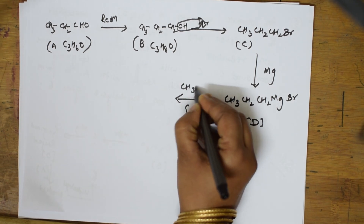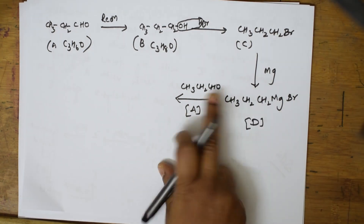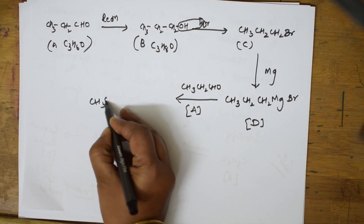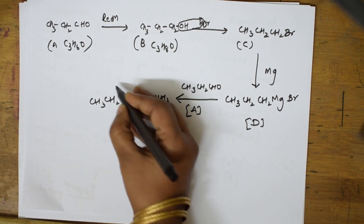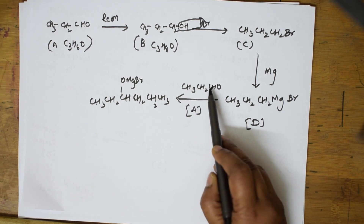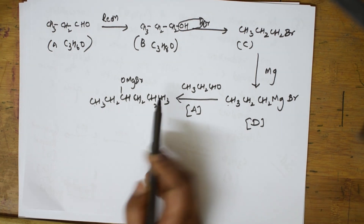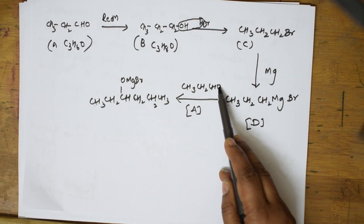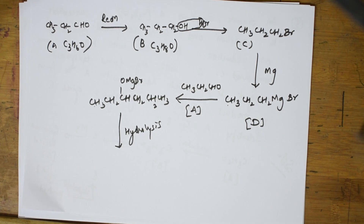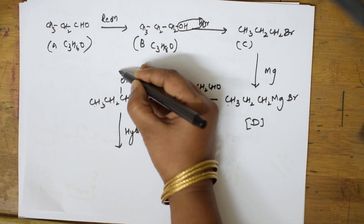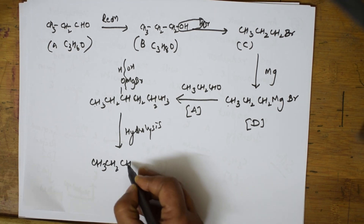Now D reacts with A, which is the aldehyde propanal (CH₃CH₂CHO). Both combine to form an addition product — a longer carbon chain. Adding CH₃CH₂CH₂MgBr to CH₃CH₂CHO gives a six-carbon adduct: CH₃CH₂CH(OMgBr)CH₂CH₂CH₃. When this undergoes hydrolysis, H and OH add across the bond — H adds on one side, OH on the other — giving the final product.